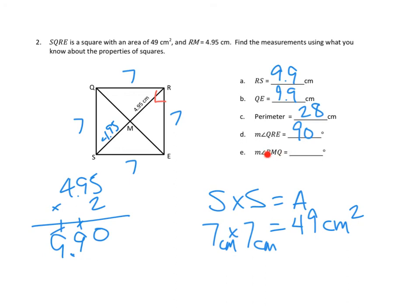What about angle RMQ? That's this angle right here. The diagonals of any rectangle — and a square is just one kind of rectangle — are going to meet and be perpendicular, which means they form four right angles. So angle RMQ is also a right angle — 90 degrees. We could figure out all this stuff from just two pieces of information: 49 centimeters squared for the area, and the length of one half of one of the diagonals. Pretty awesome — it makes us feel like an expert about squares!